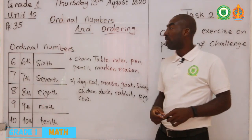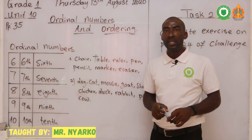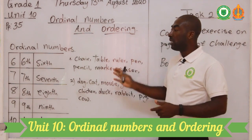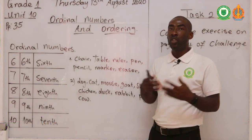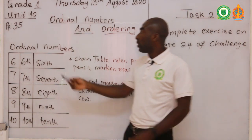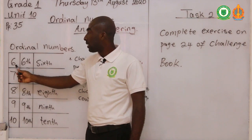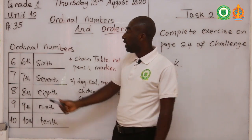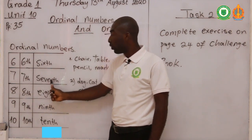Hello students, welcome to our second video. On this video we'll be looking at another set of ordinal numbers. The first set we did was from one up to five. Now we're going to look at six up to ten — how we can identify these ordinal numbers. When the person is number six, it means the person is in the sixth position. If the person is number seven, it means the person is in the seventh position.